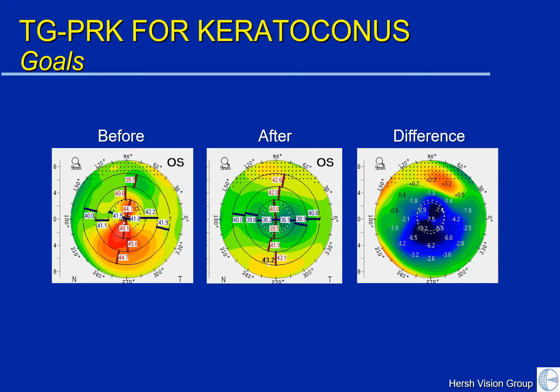Here is one example of a case that we recently did. On the preoperative corneal map on the left, this is a patient with keratoconus with steepening below and a little bit of flattening above. After the topography-guided PRK technique, you can see that the cornea is made more green — smoother and more regular — with flattening down below and a little bit of steepening above. It is made smoother, more symmetric, with a better quality of optics. On the right side, you see the difference map, and this shows a significant flattening — the blue part down below — with some steepening up above, just what we had programmed into the laser based on the preoperative map.